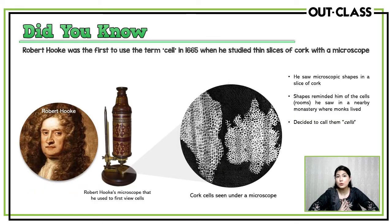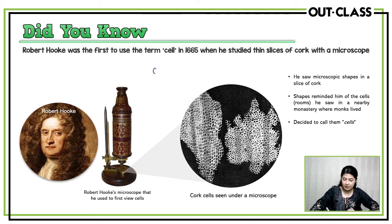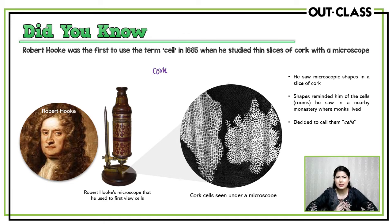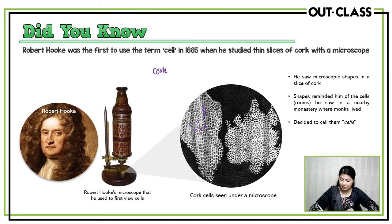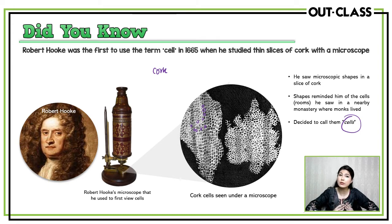Did you know that Robert Hooke was the first one to use the term 'cell' in 1665? What he did was he took thin slices of cork and examined them under the microscope. He saw these tiny tiny structures, and they reminded him of the cells — meaning rooms — in a monastery. So he decided to call them cells, and that has had a lasting impact because 350 years later we still call the basic building blocks of life 'cells'.